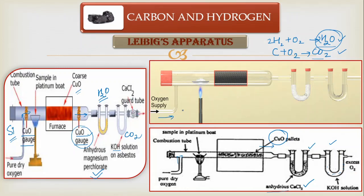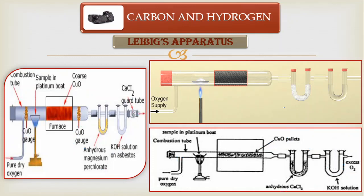To revise the entire setup: supply pure and dry oxygen gas, place the coal sample in the combustion chamber, heat it in the presence of copper oxide catalyst, use two gauges to ensure pure dry oxygen enters and CO₂ and H₂O exit. The gases are then absorbed one by one. You pre-weigh the anhydrous calcium chloride, and once it absorbs H₂O you weigh it again. The increase in weight of the calcium chloride equals the amount of H₂O formed. Let's say x grams is the increase in the CaCl₂ tube and y grams is the increase in the KOH tube.